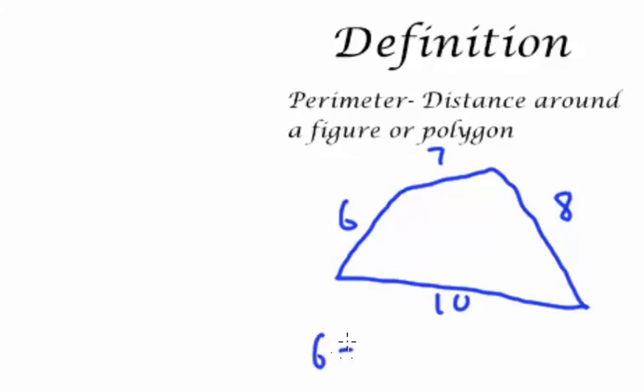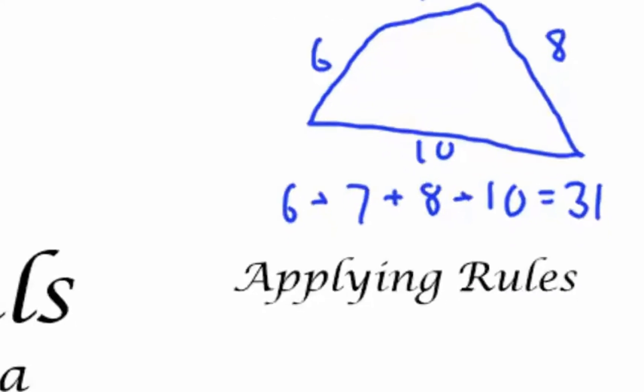Now to find a perimeter, I want to know what all those sides equal up to together. So I'm going to add 6 plus 7 plus 8 plus 10. And as I carefully do the addition, I realize that I get 31. So the perimeter of this four-sided figure is 31.